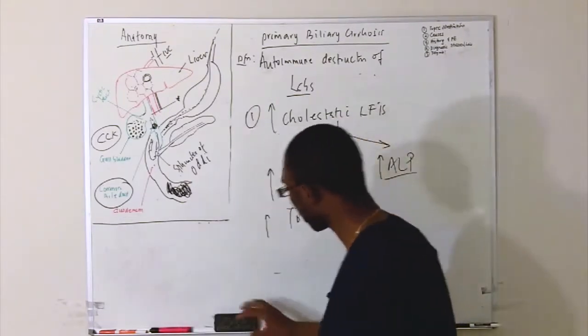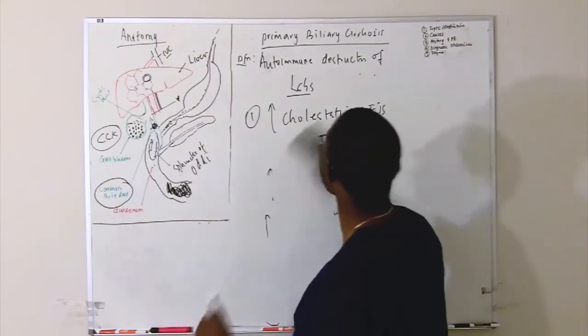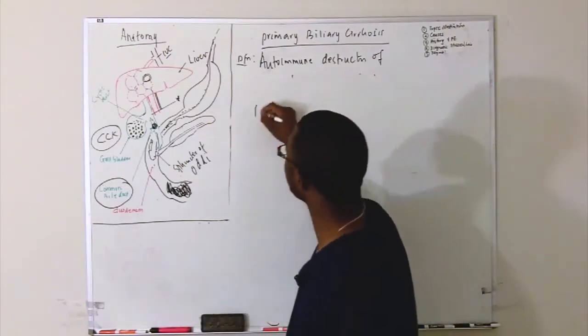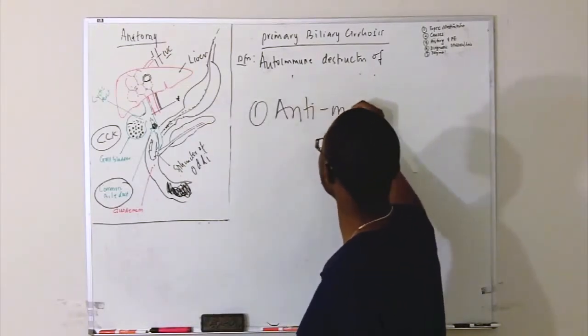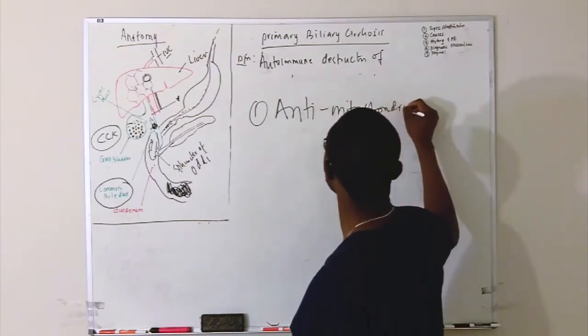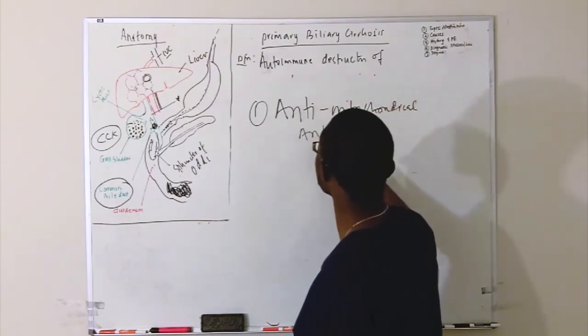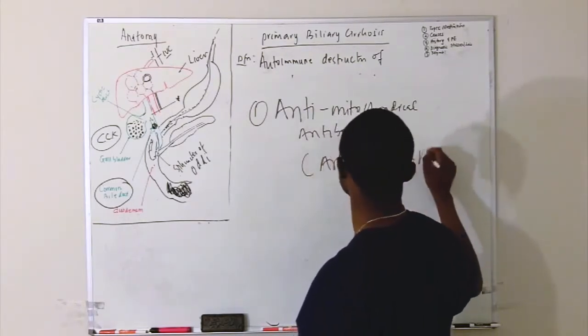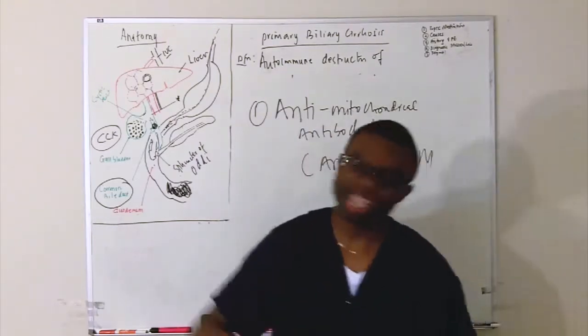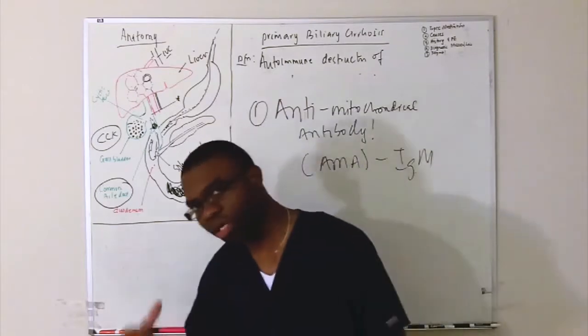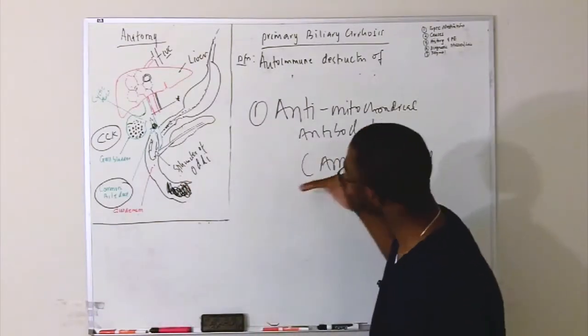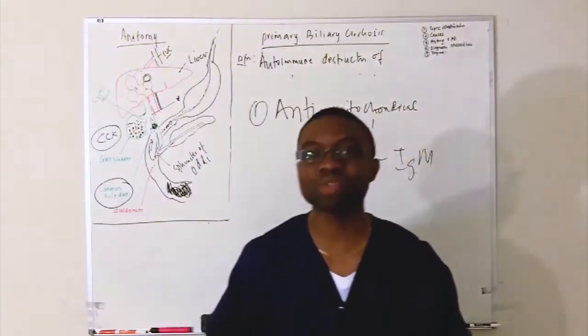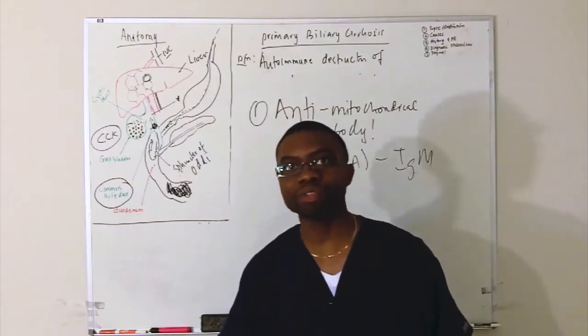What antibody are we going to order to actually know this lady's got primary biliary cirrhosis? It's called anti-mitochondrial antibody, AMA. These are IgM immunoglobulins binding constantly to the intrahepatic ducts. You've got to know that, it's extremely important. This is the key. If that comes back positive, it's specific, 90 to 95% specific. So you really have to know that.